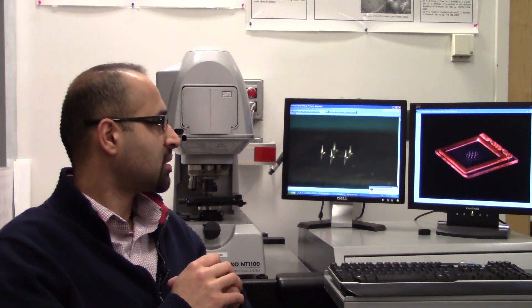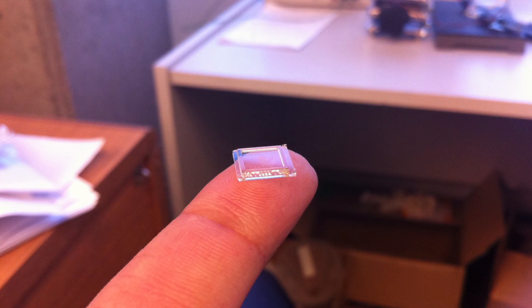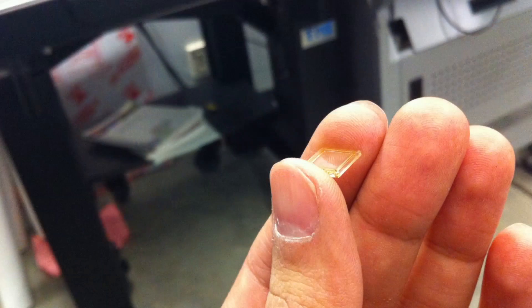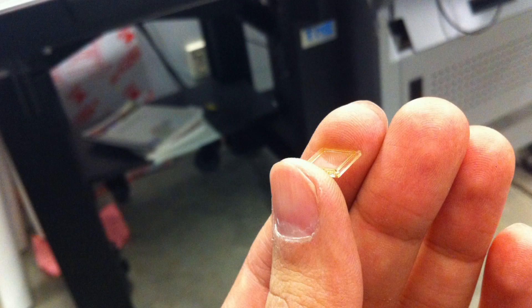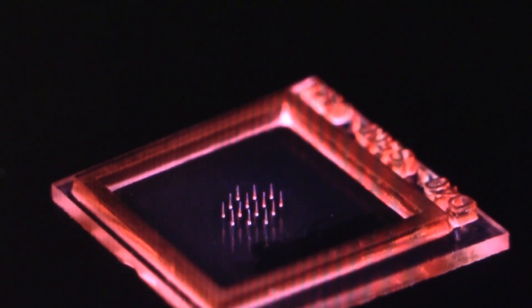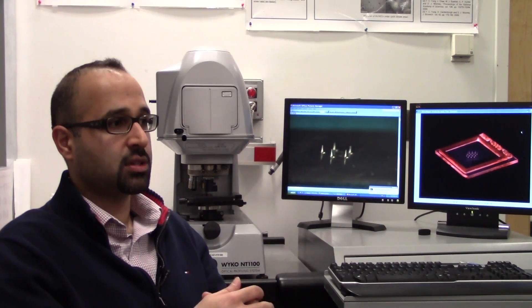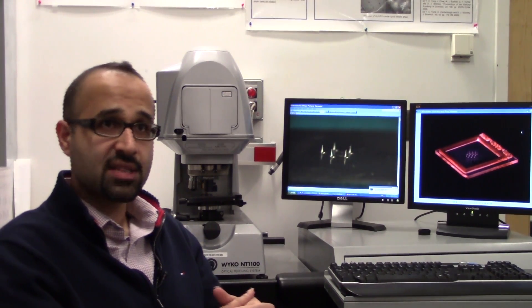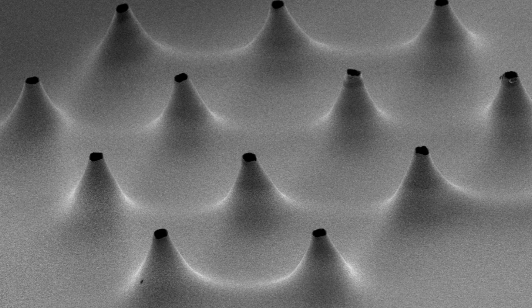We started this whole project from scratch, from concept. We wanted to come up with a procedure that is cost-effective. The way that we make these needles is we have these molds which have an array of pillars, and we deposit the polymer solution. When the solvent evaporates, layers form around these pillars. We started developing this fabrication procedure for plastic needles, and plastic is a very cheap material.